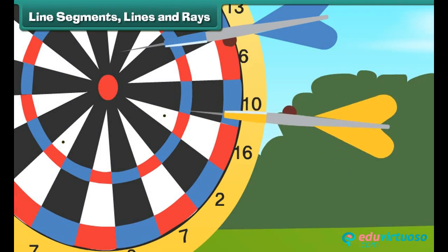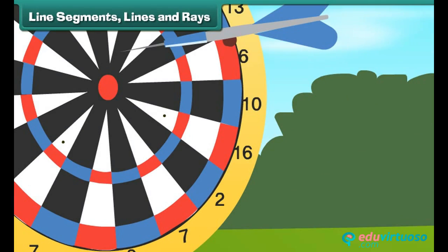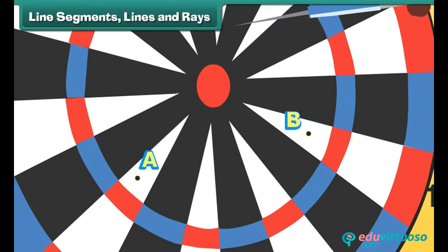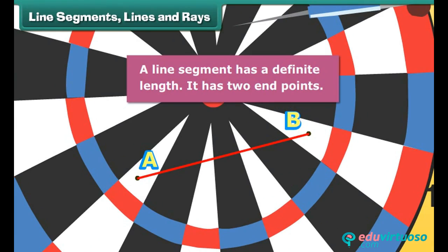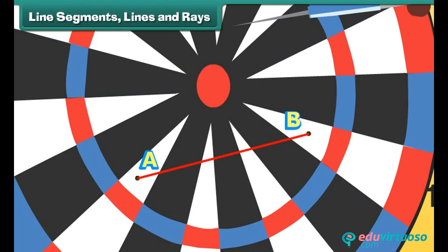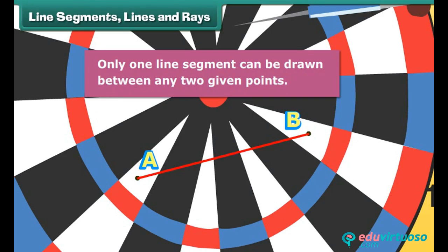Let us remove another dart to reveal another point. We name the two points A and B. We now join the two points and get the line segment AB. A line segment has a definite length and has two end points. Only one line segment can be drawn between any two given points.